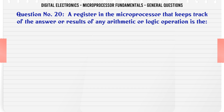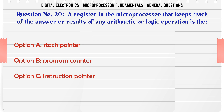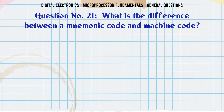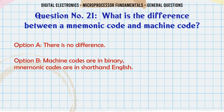A register in the microprocessor that keeps track of the answer or results of any arithmetic or logic operation is the: A. Stack pointer, B. Program counter, C. Instruction pointer, D. Accumulator. The correct answer is Accumulator.